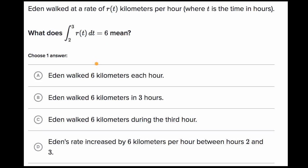What does the definite integral from two to three of r(t) dt equals six mean? So this is going from t equals two hours to t equals three hours. It's essentially the area under the rate curve. And here the rate is a speed. Eden is walking at a certain number of kilometers per hour. So this means that from time two hours to time three hours, Eden walked an extra six kilometers.